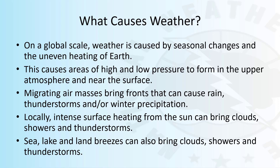On a global scale, weather is caused by seasonal changes and the uneven heating of Earth. This causes areas of high and low pressure to form in the upper atmosphere and near the surface. Migrating air masses bring fronts that can cause rain, thunderstorms, and winter precipitation.